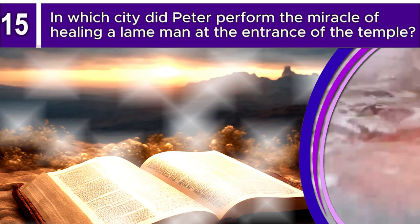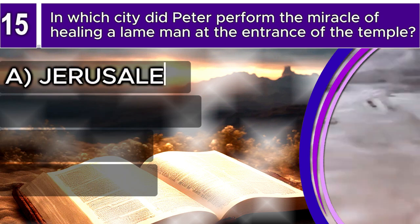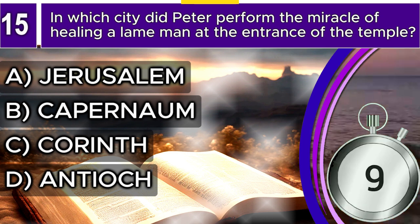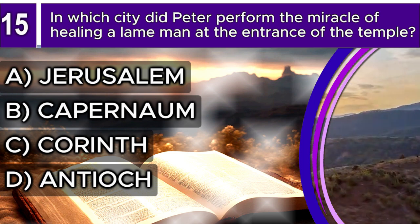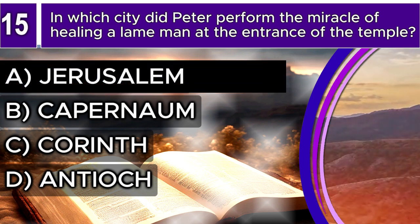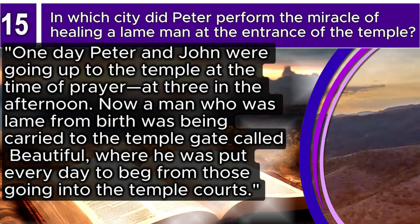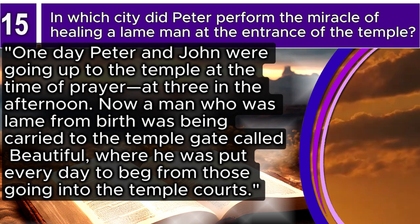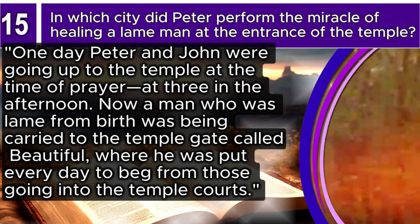Question 15. In which city did Peter perform the miracle of healing a lame man at the entrance of the temple? A. Jerusalem, B. Capernaum, C. Corinth, D. Antioch. The correct answer is A. Jerusalem. Acts 3, verses 1–2 says: One day Peter and John were going up to the temple at the time of prayer at three in the afternoon. Now a man who was lame from birth was being carried to the temple gate called Beautiful, where he was put every day to beg from those going into the temple courts.